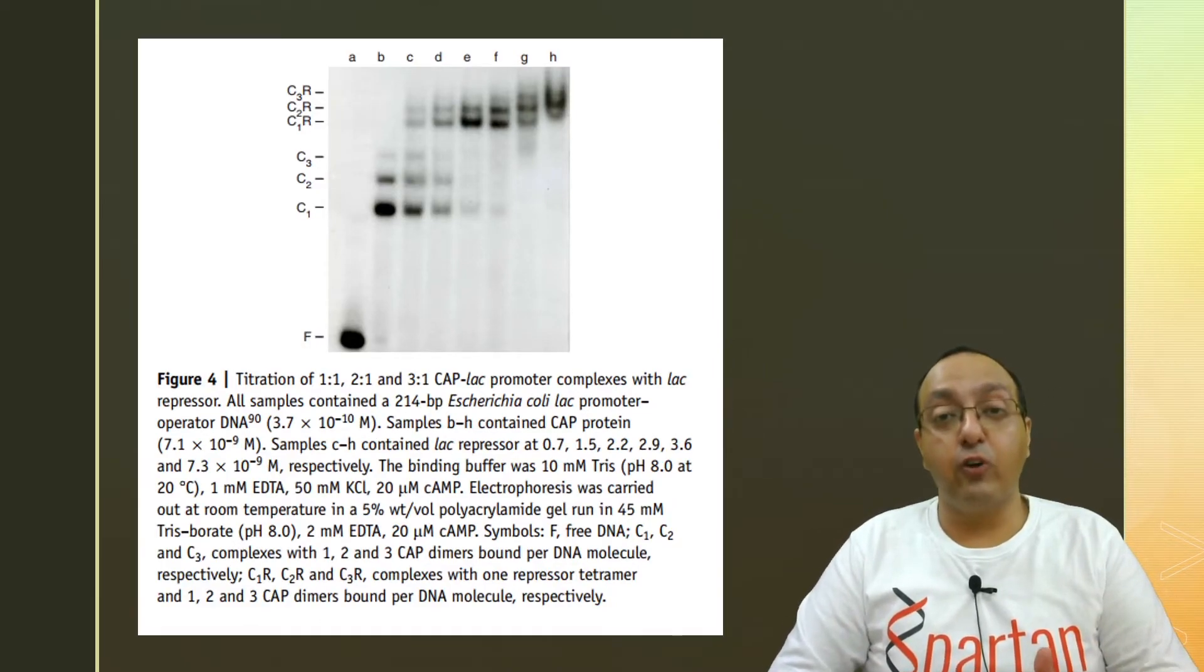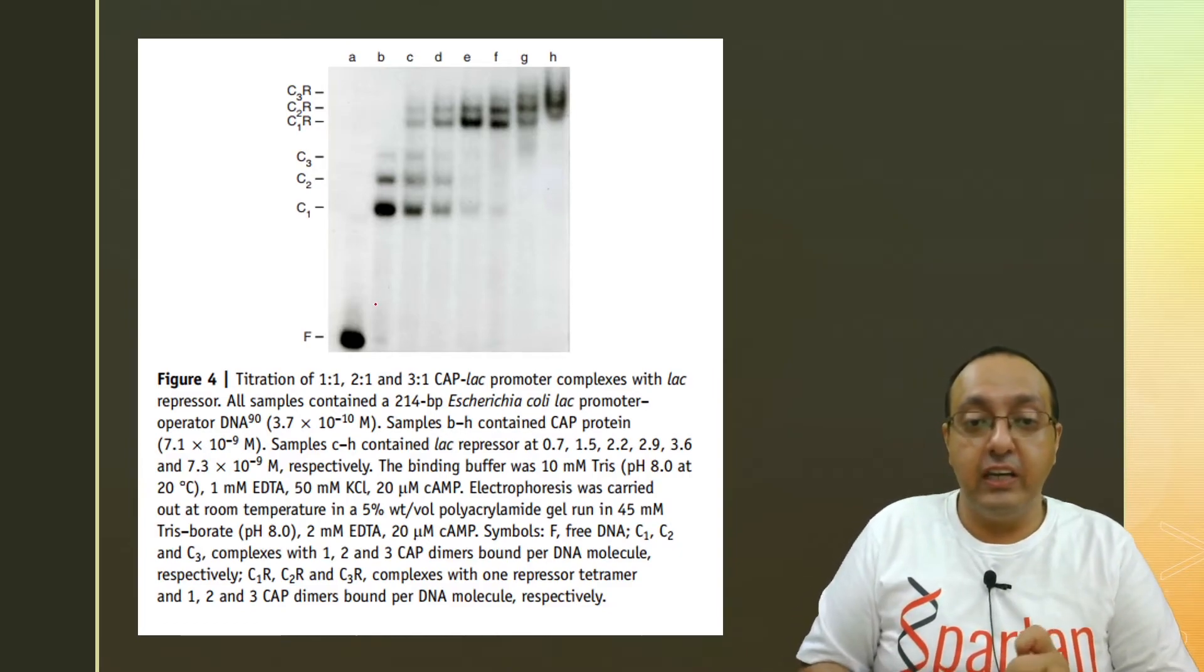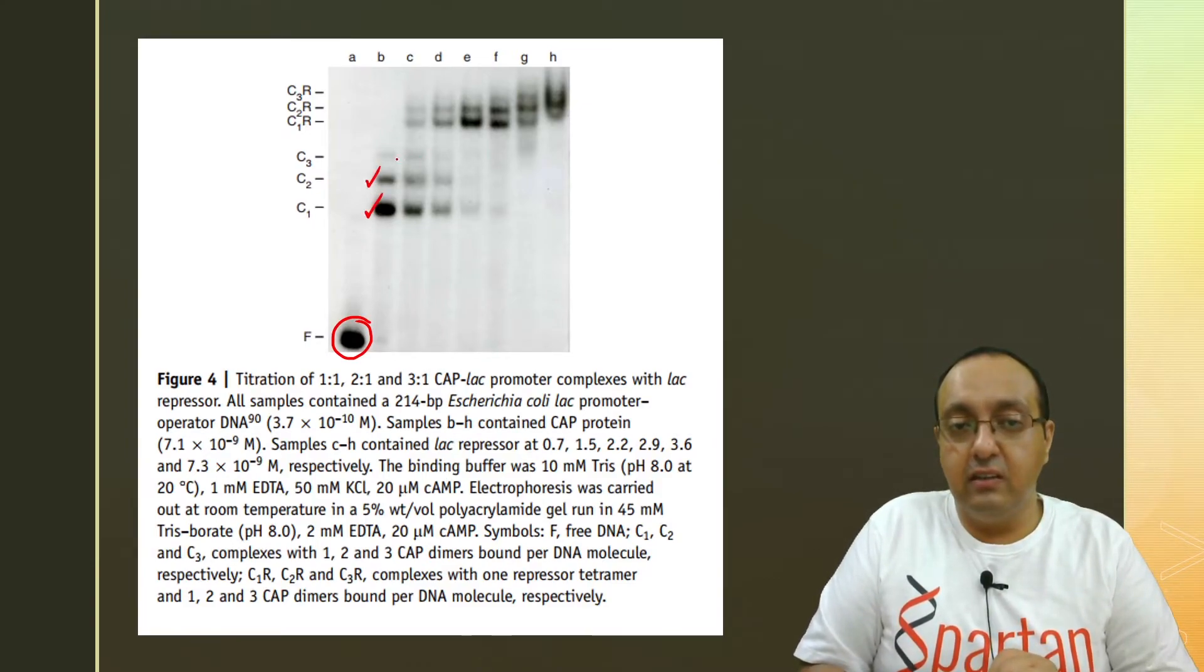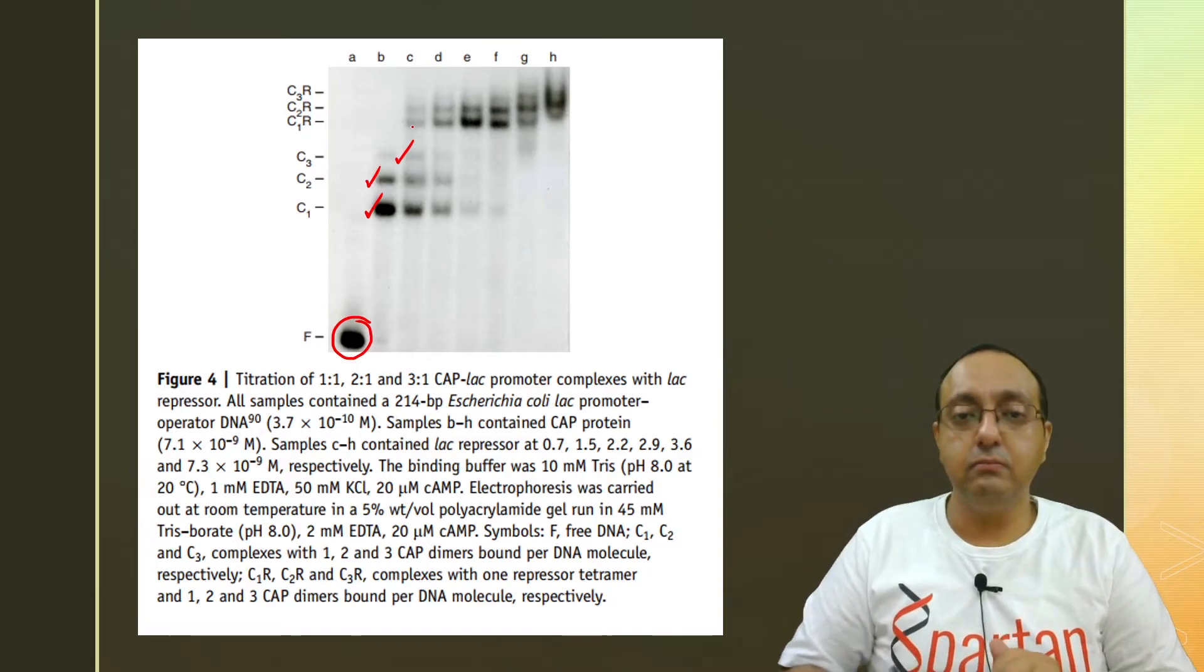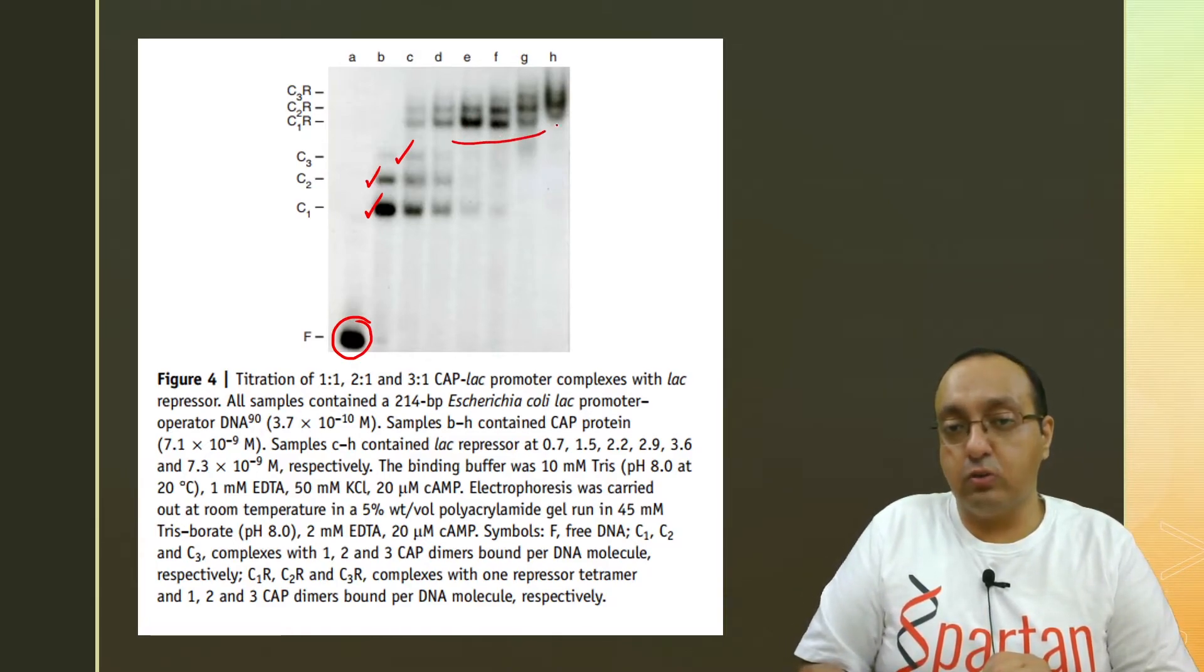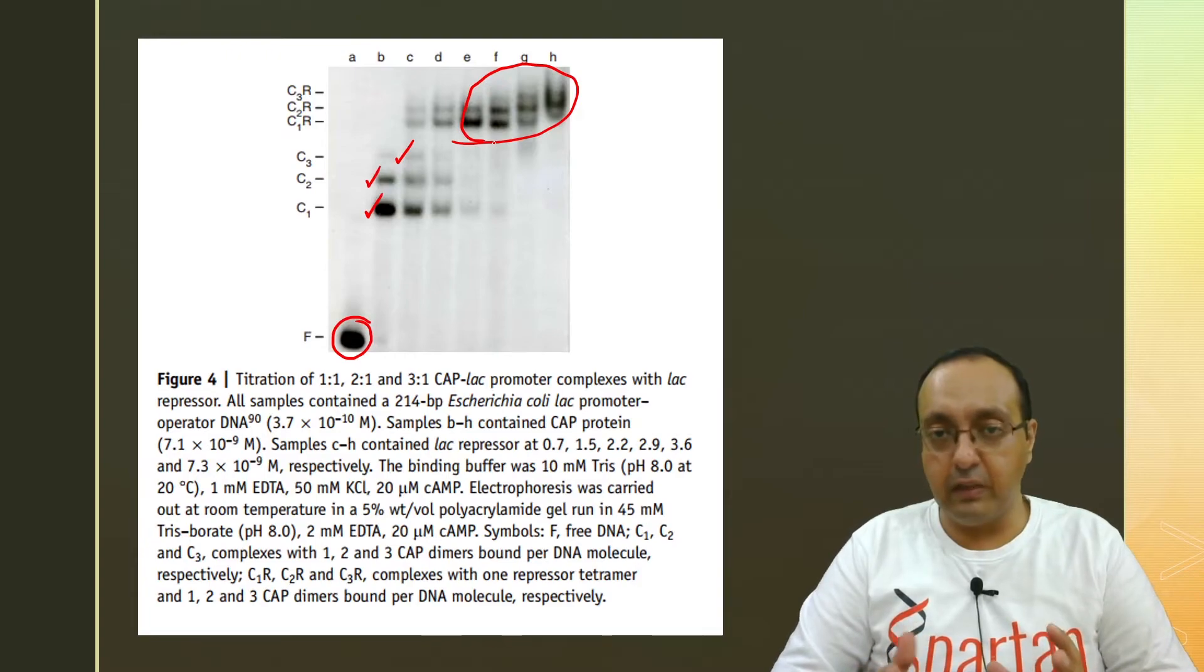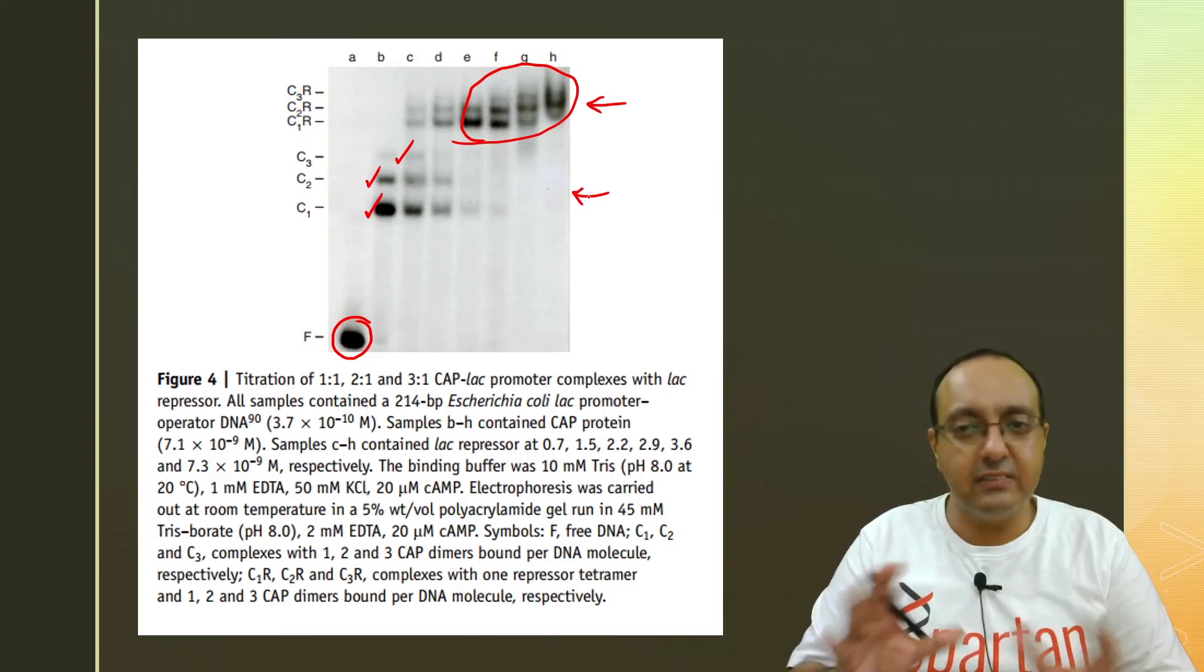Again, this is an example from, I think many of you must be familiar with. This is the binding of CAP protein, catabolite activator protein, as well as the lac repressor to the operator and promoter DNA. So here we have free DNA. So just the DNA without any protein. And here you have the CAP protein. So there are these multimers being formed as you increase the amount of CAP protein. And when you add repressor, because the repressor also binds to this, you can see the formation of different multimers of CAP protein, as well as the repressor being formed and it leads to even higher shifts.